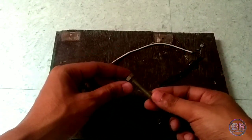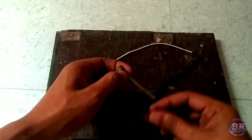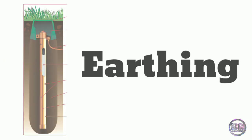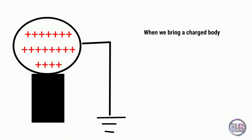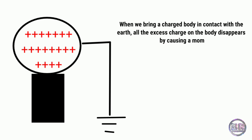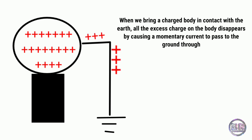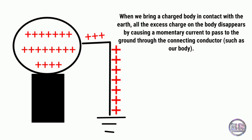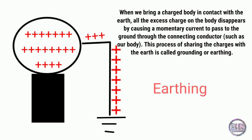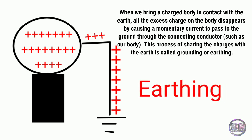Now we have to discuss one important topic — earthing. When we bring a charged body in contact with the earth, all the excess charge on the body disappears by causing a momentary current to pass to the ground through the connecting conductor, such as our body. This process of sharing the charge with the earth is called grounding or earthing.